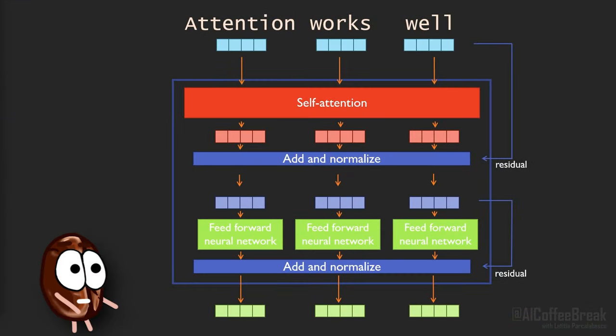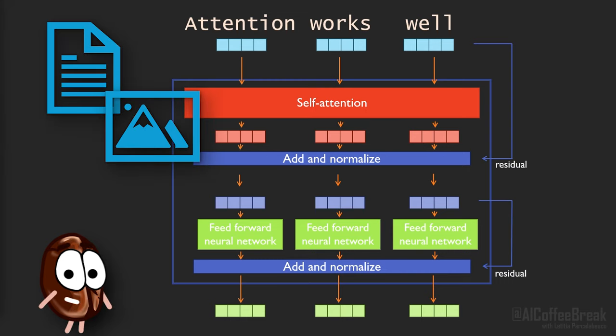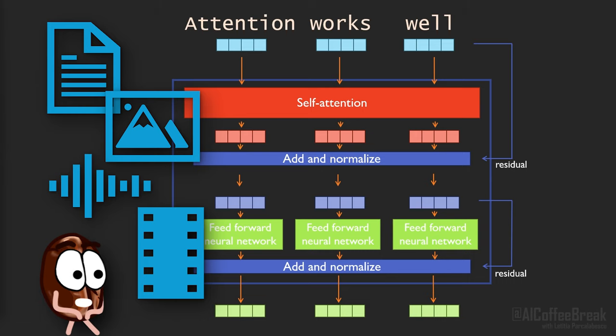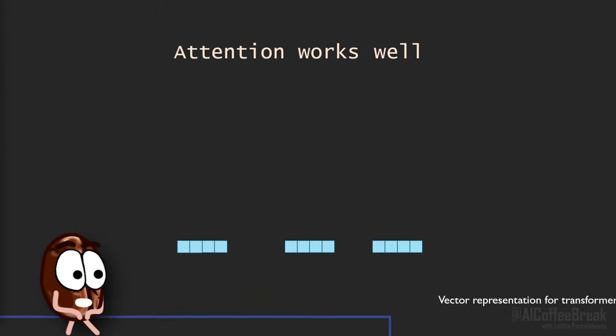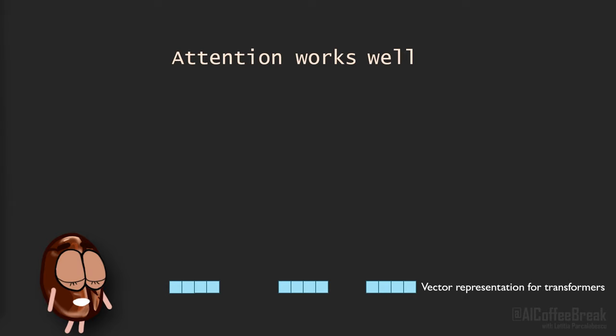Transformers can work with any kind of data — text, images, speech and so on — as long as we represent the data as a set of vectors. However, it is not always straightforward to do this, as for example text does not naturally come as a sequence of vectors. That means before we can look at the inner workings of the transformer, we need to understand how to represent inputs as vectors.